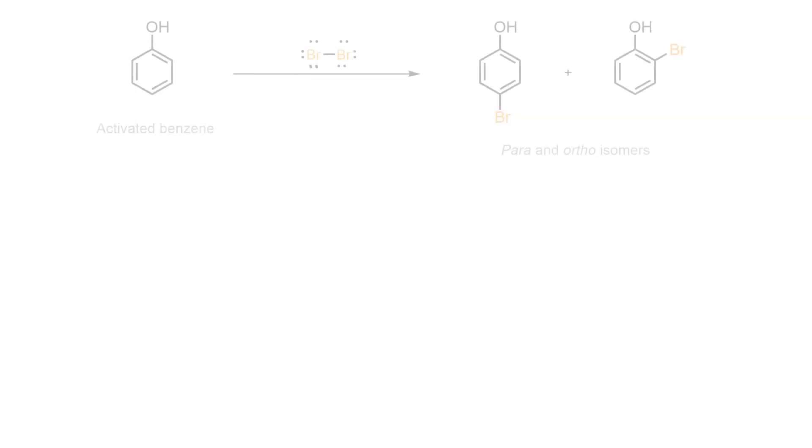Overall, phenol is an activated system and reacts with electrophiles faster than does benzene itself, so a catalyst is not required. The observed ortho-para regioselectivity is due to those positions being activated by the hydroxyl group, but also the thus-formed carbocations being better stabilized compared to the alternative meta-substituted situation.